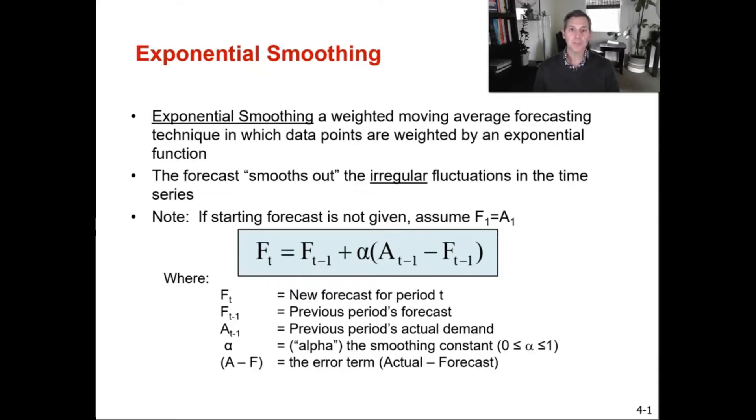Your smoothing constant has to be between zero and one. It cannot be a negative number. And then A minus F, both uppercase, that's your error term. That's your actual minus forecast. So here's your formula for exponential smoothing.